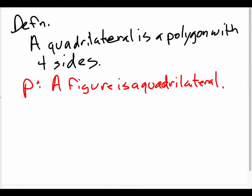All right, that's good. And then Q would be the conclusion. So this is the hypothesis. This is the next thing we're writing down as a conclusion. A figure has four sides.